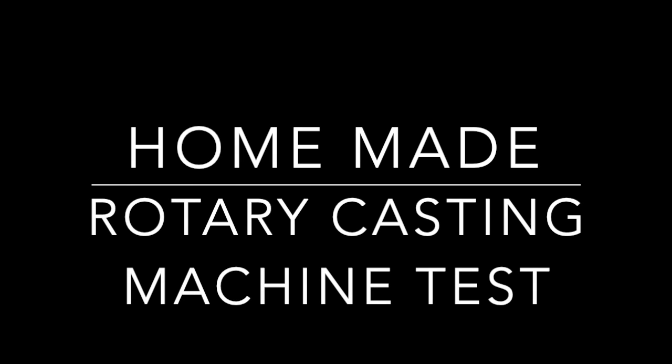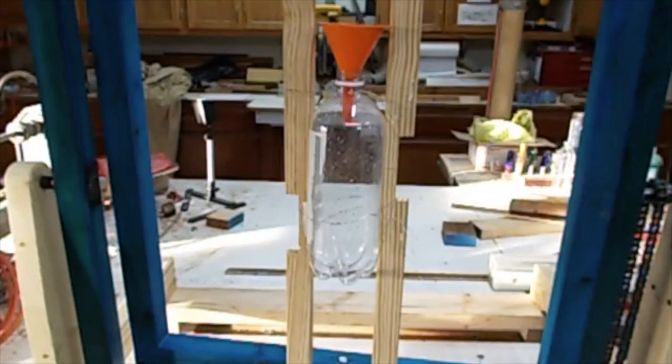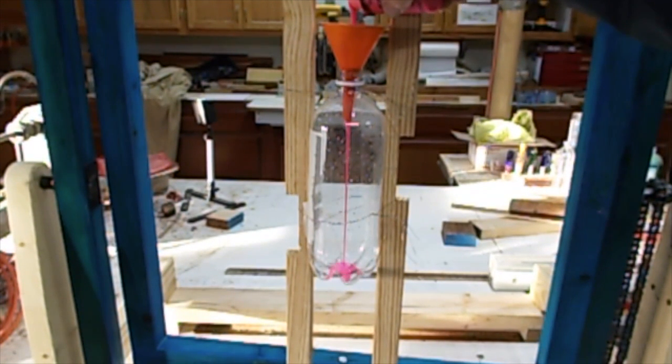Hi, I made a rotary casting machine, but before I used the expensive resin in it, I wanted to check it to make sure it worked. So I'm just using this old bottle with a little bit of paint in it.